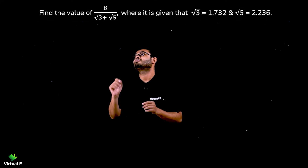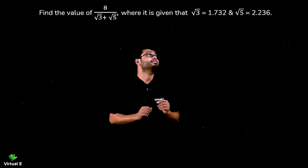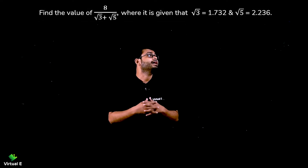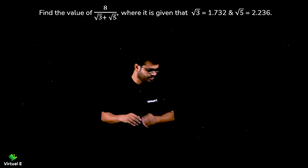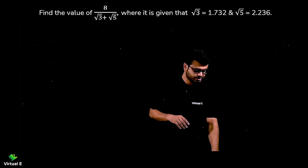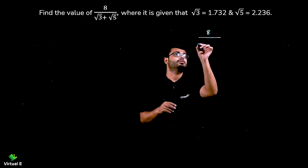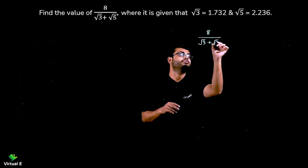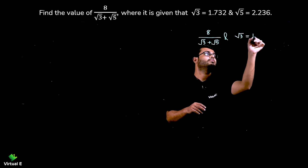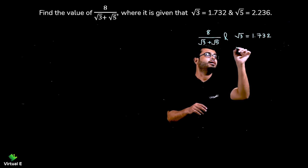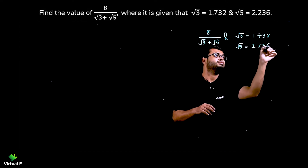Let's discuss one more question: find the value of 8 divided by (root 3 plus root 5), where it is given that root 3 is equal to 1.732 and root 5 is equal to 2.236. We need to find the value of this expression.